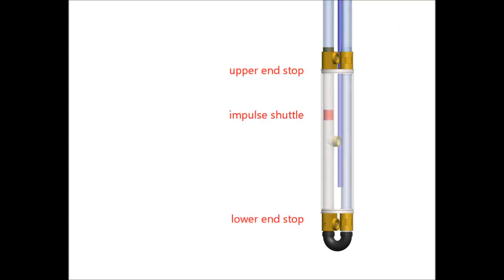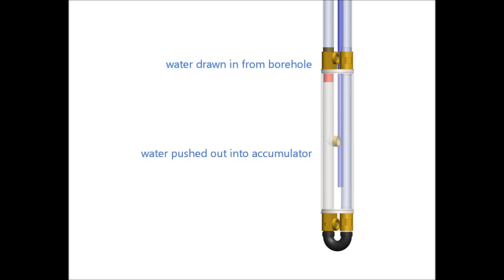If we look inside the device, we have an impulse shuttle that moves with the flow between the two end stops. As the fluid oscillates to the left, the shuttle strikes the upper end stop, sending an expansion wave upwards and a compression shock downwards and around the U-bend. The inlet valve draws water in from the borehole and water is pushed out of the outlet valve into the accumulator, which then travels up the delivery line.